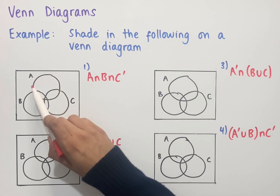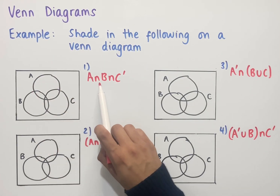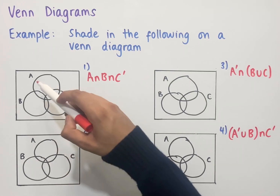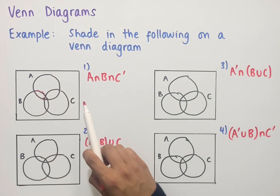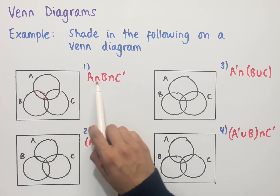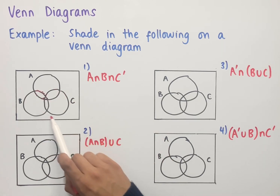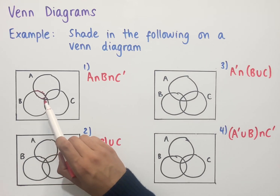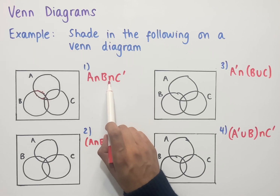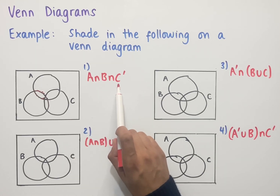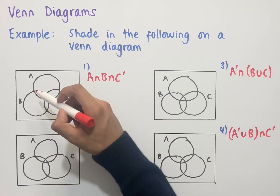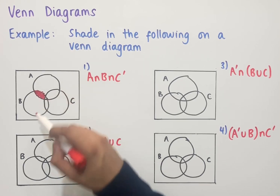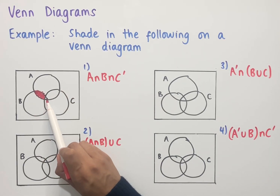The first example is A intersect B intersect C complement. We first have A, which is the top circle, and we're looking at the intersection with B. So A intersect B would be this region here. Now we're also looking at the intersection with C complement. C complement is everything outside of this circle, so this middle region is not included because it's within C. We shade in this region, not including the middle part or the intersection between A, B, and C.